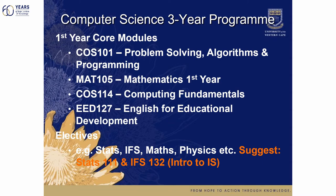If you do computer science in the three-year program, these are the core modules you must do in your first year. You have computer science COS 101, which is problem solving, algorithms and programming. You'll do mathematics MAT 105. You'll do Computing Fundamentals — I'll speak about that in a moment. And you'll do English for Educational Development, as it's important to have a good grasp of English to understand, read, communicate, and interpret. Then you'll have one elective from options such as statistics, information systems, mathematics, or physics. If unsure, we suggest you do statistics and information systems, as these are important subjects to support your computer science.